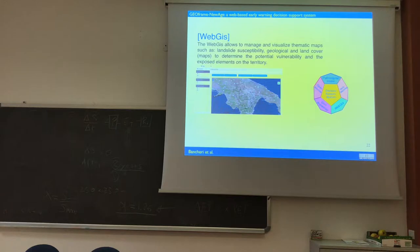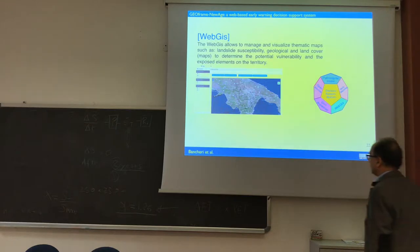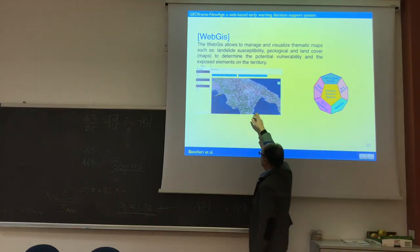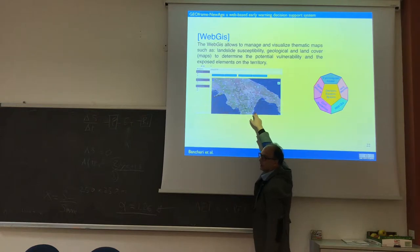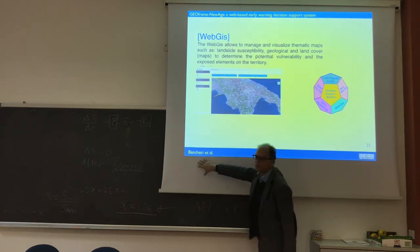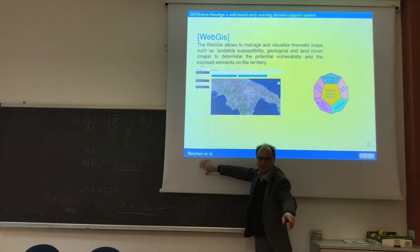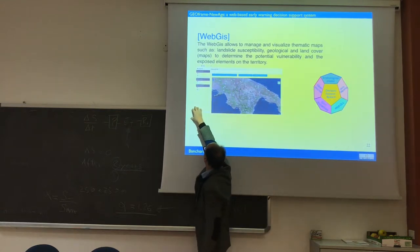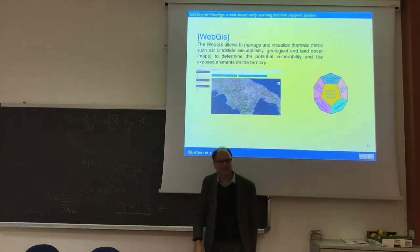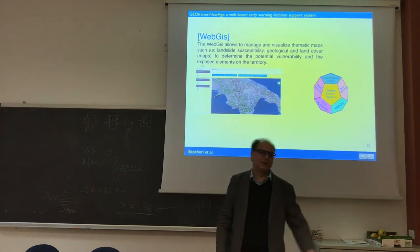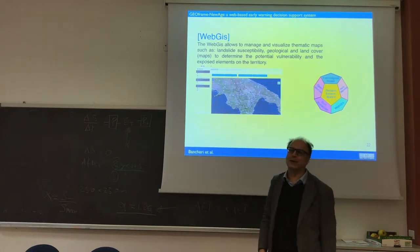They have the Basilicata region — for those who are not Italian, this is in the south of Italy. Here you can see Puglia, Calabria, Sicily, and Sardinia on the map.